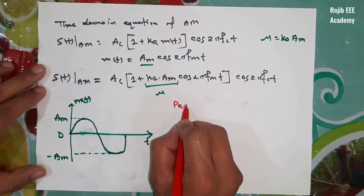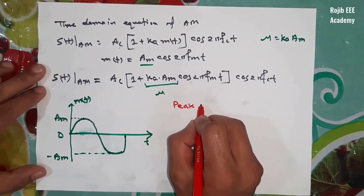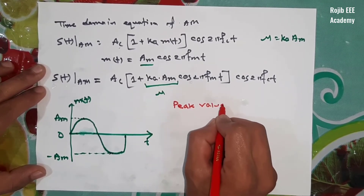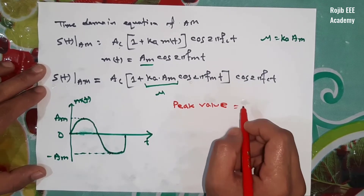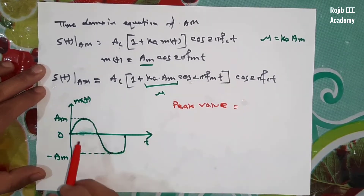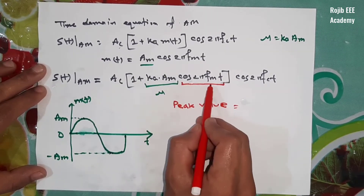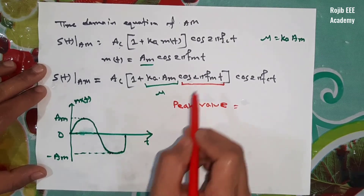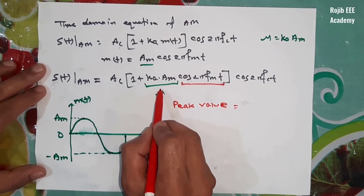That means the waveform does not drop to zero. The peak value is not zero. The equation gives the peak value. This peak value is the maximum value of 1, and we can see the maximum value is 1 plus mu.